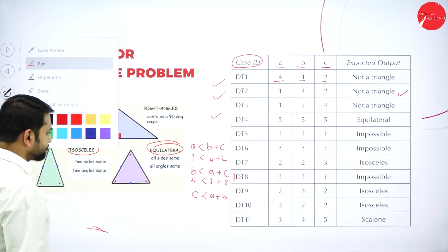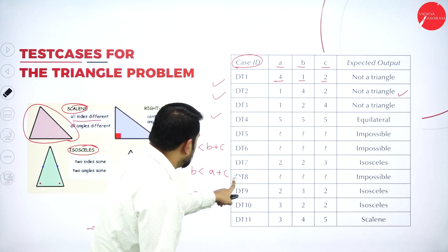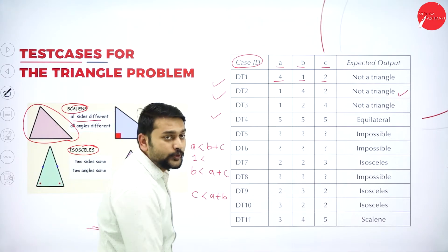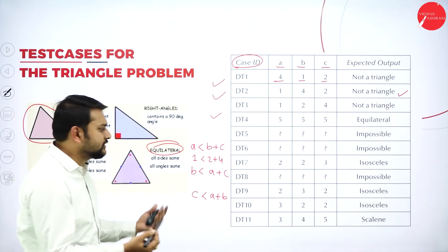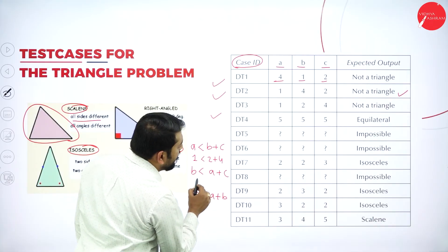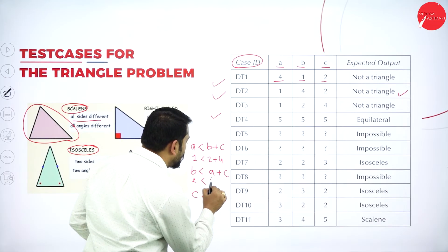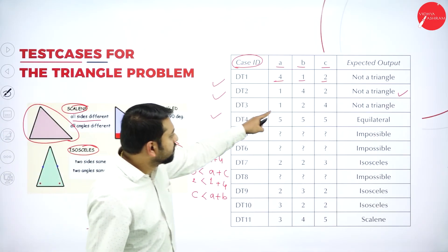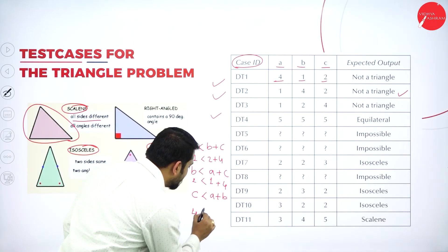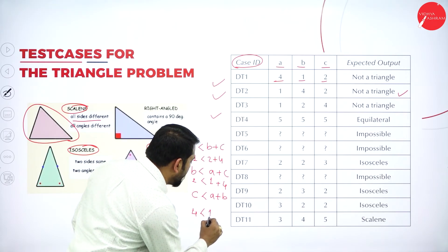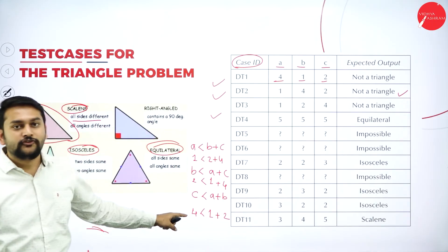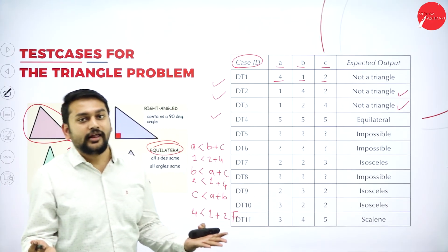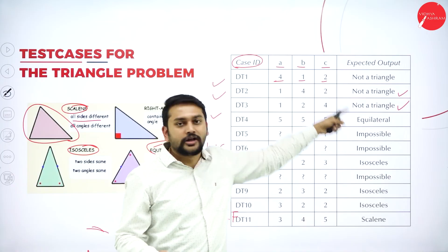Case 3: A=1, B=2, C=4. Check condition one: 1 < 2+4 = 6. True. Check condition two: 2 < 1+4 = 5. True. Check condition three: C < A+B, that is 4 < 1+2 = 3. This is false — 4 is not less than 3. The third condition fails, so the output is not a triangle.